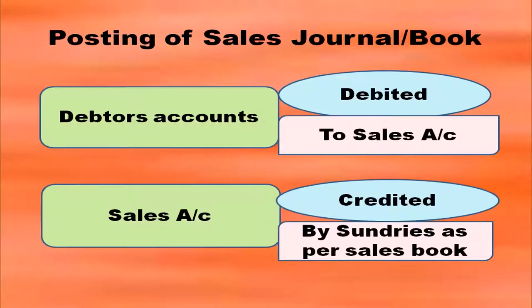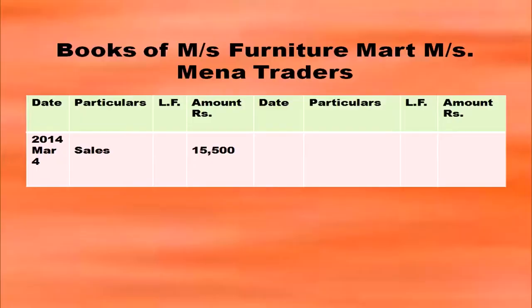After completing the sales book, you post the details to two main accounts: the debtor's account and the sales account. The debtor's account is debited with 'To Sales Account' in the particulars column, and the sales account is credited with 'By Sundries as per Sales Book' in its particulars column. Open a separate debtor's account for each customer — for example, Messers Mina Traders.